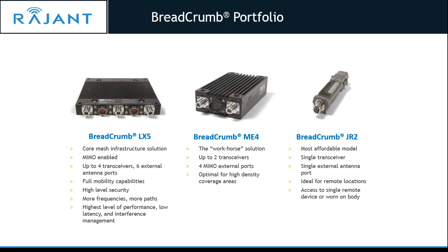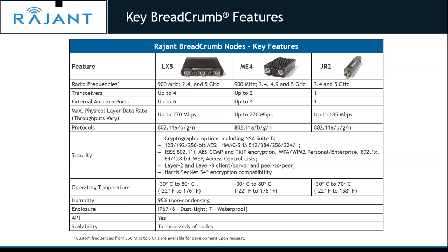I'd be happy to send out spec sheets for these products. The key features breakdown: LX5 has four transceivers, six external antenna ports, up to 270 Mbps, 802.11 protocol. We are pretty much vendor agnostic — if a customer has a fluid mesh or competitor network deployed, we can fit right underneath as the layer 2 client to add the mobility aspect. That can be a good way to introduce the technology to an underperforming mesh network. We've seen that work in the past.